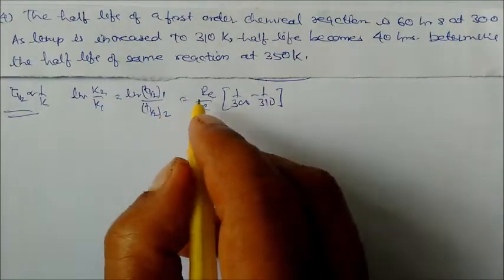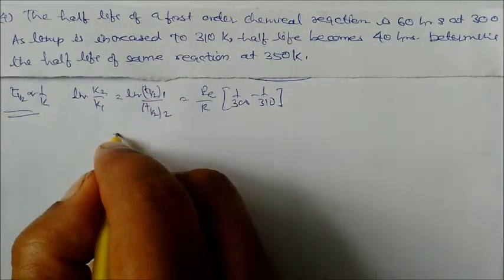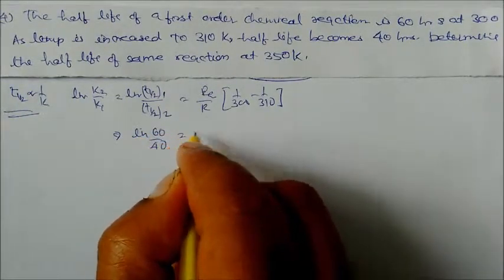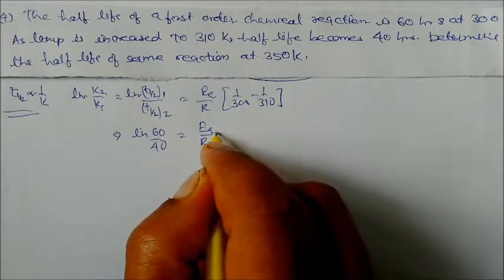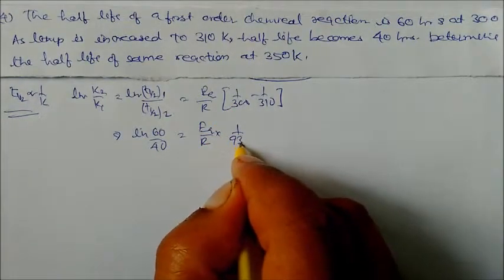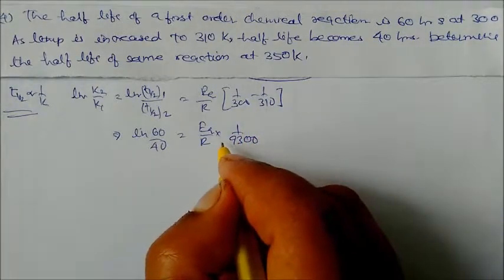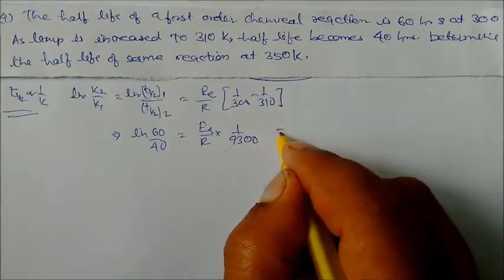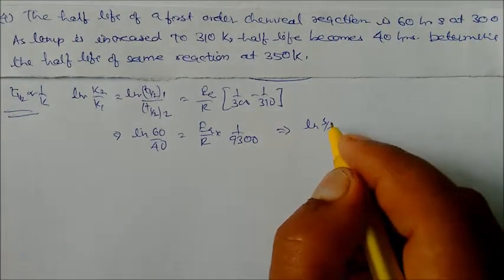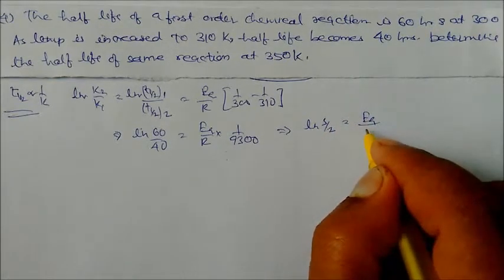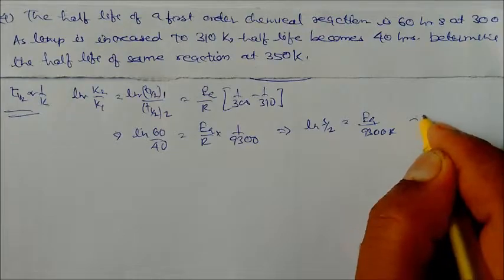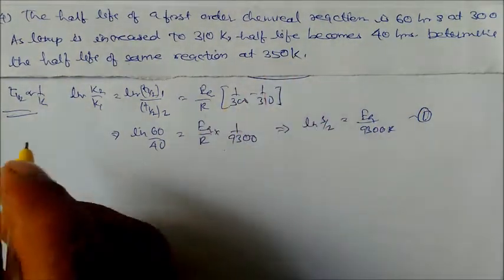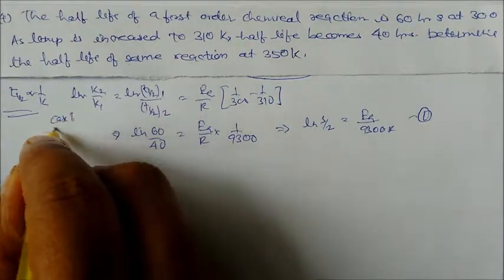On solving, we get ln(3/2) = EA / (9300R). This is equation number 1. For case 2 at 350 K, we write ln(t½ at 300K / t½ at 350K) = EA/R × (1/300 minus 1/350), giving ln(60 / t½₃₅₀) = EA/R × (20/105000), which simplifies to EA/(2100R). This is equation number 2.